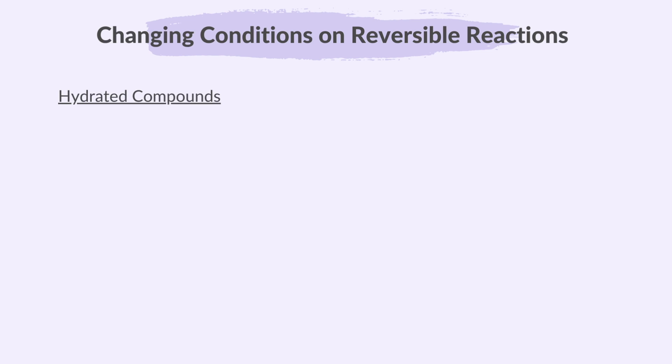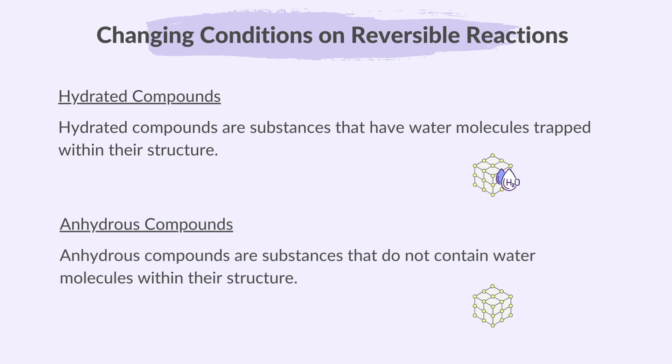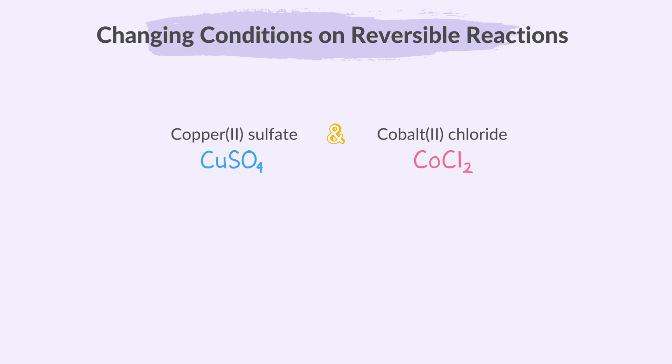Let's explore the effects of changing conditions on reversible reactions. Hydrated compounds are substances that have water molecules trapped within their structure, while anhydrous compounds are substances that do not contain water molecules within their structure. Both copper-2-sulfate and cobalt-2-chloride can exist in both hydrated and anhydrous forms — they can have water molecules in them, making them hydrated, or be without water, making them anhydrous.